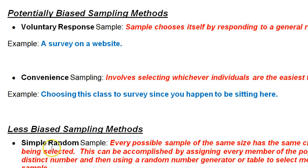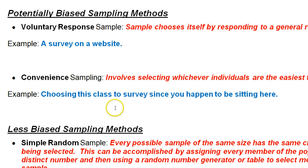This video is about sampling and bias. There are six main methods of sampling that we're going to talk about. Two of them are very likely to give biased samples.